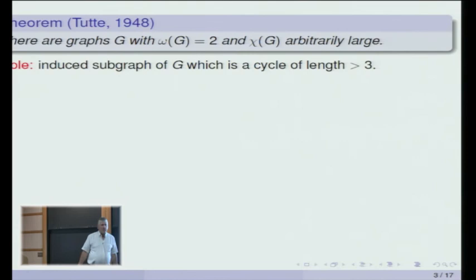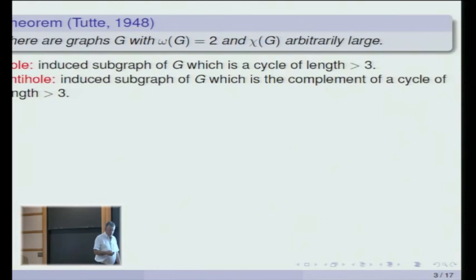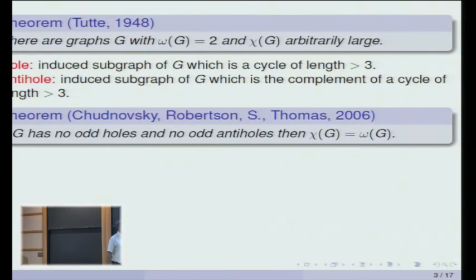I'm only going to care about odd holes. An anti-hole is just the same thing in the complement graph. If you exclude both odd holes and odd anti-holes, then you do get a connection — they're equal. That was a famous problem of Berge for a long time. We solved it in 2006. So that's nice, that's done.